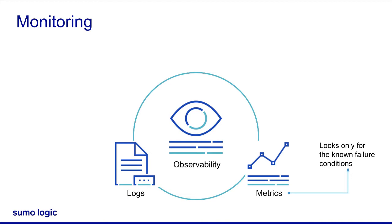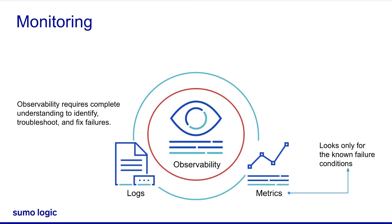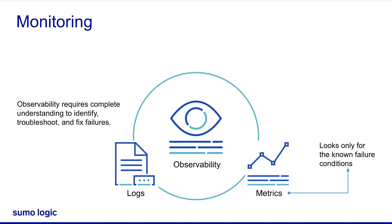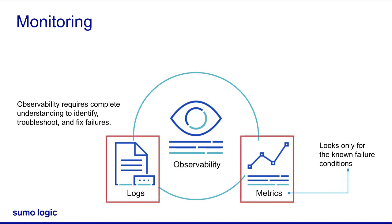Oh, okay. So Sumo can find unknown conditions then? Yes. Observability requires you to completely understand the application so that you can identify, troubleshoot, and fix any conditions, known or unknown, about the application and its health. And to gain insights from the collected data, just collecting and analyzing metrics and logs is not enough. It requires more than that.